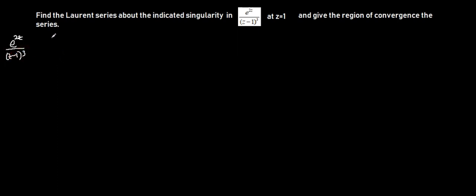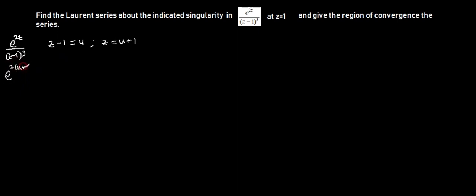So at this point, we have z minus 1. Let's equate this to u, so z equals u plus 1. Let's substitute these two into the expression. We are going to have exponential 2 times (u plus 1) divided by u raised to the power of 3.